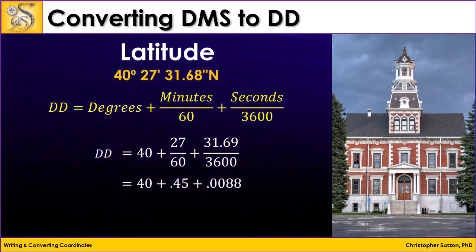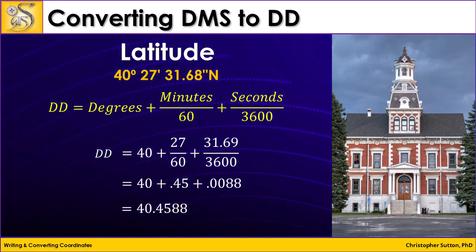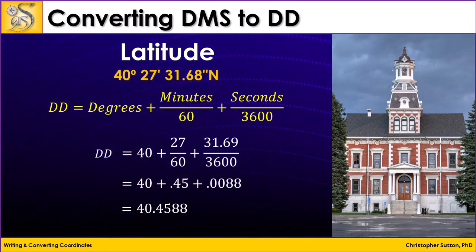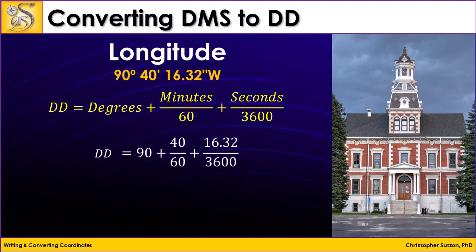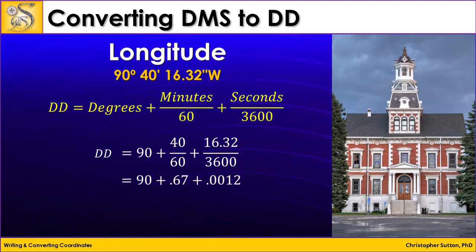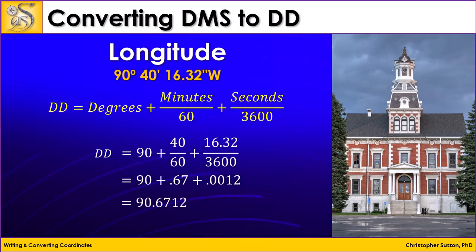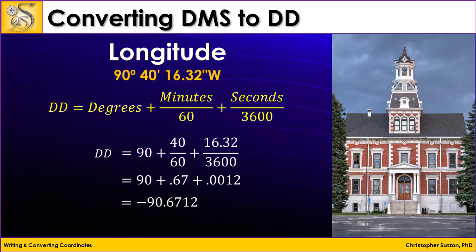The latitude for the courthouse is 40.4588 degrees. Because we are in the northern hemisphere, the value is positive. We'll do the longitude the same way: 90 plus 40 minutes divided by 60 plus 16.32 seconds divided by 3600, which gives us 90 plus 0.67 plus 0.0012. So the longitude position for the courthouse is 90.6712 degrees. Because the courthouse is in the western hemisphere, it has a negative value.